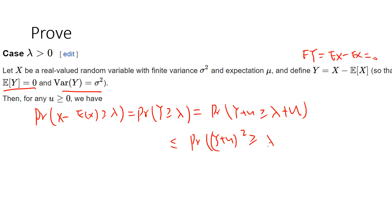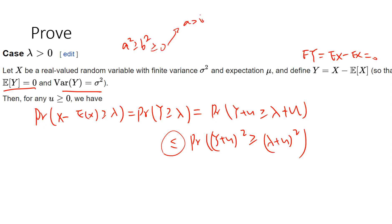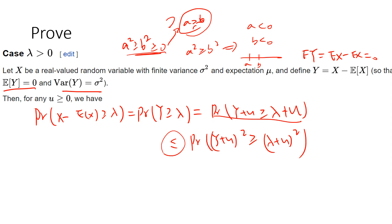This is less than or equal to the probability that (Y + u)² ≥ (λ + u)². The first non-trivial step is this inequality. If a² > b² and b > 0, then a > b, but there is still a chance that a² > b² with a negative — so the event {Y + u ≥ λ + u} is a subset of {(Y+u)² ≥ (λ+u)²}. By the Markov inequality, this is bounded by E[(Y+u)²] divided by (λ+u)².